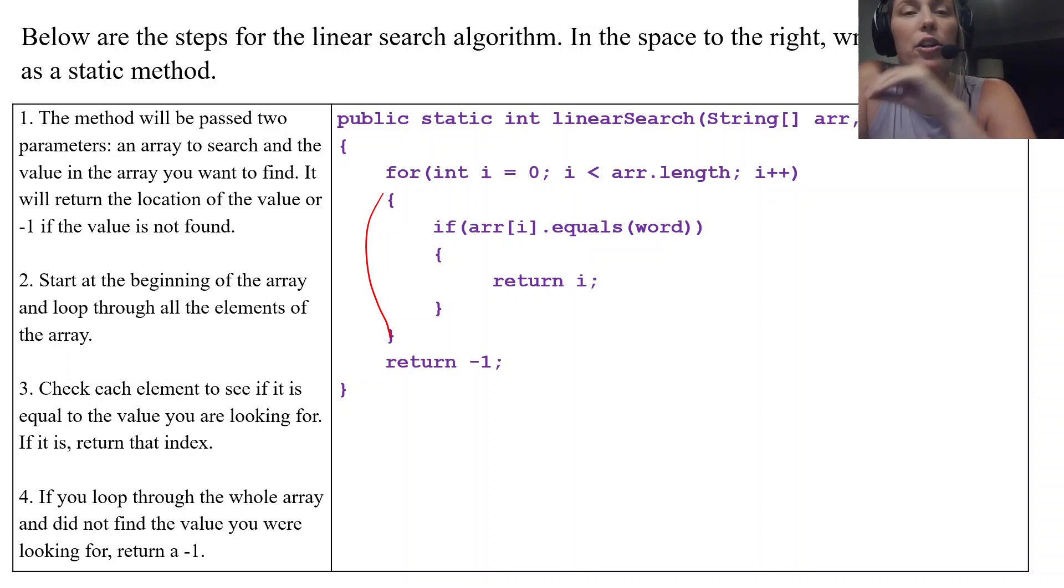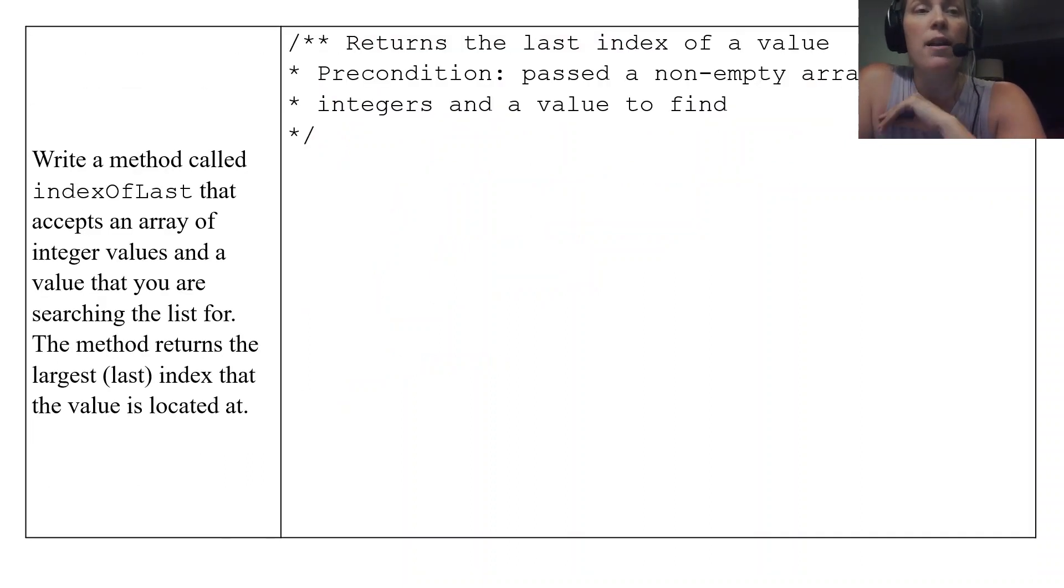So again, you can apply little changes to this algorithm to get it to accomplish whatever task you want it to do. So our last example in the set of notes is just a little modification of this linear search algorithm. It says write a method called indexOfLast that accepts an array of integer values and a value that you are searching the list for. So if you have an array of integer values, you're searching the array for an integer value. The method returns the last index, the largest index, or the last index that the value is located at, not the first.